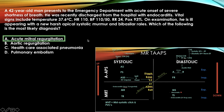The answer is acute mitral regurgitation. The question states the person was recently discharged with endocarditis. Find endocarditis on the chart. Is he an IV drug user? No — so most likely it's not tricuspid stenosis. Endocarditis in a non-IV drug user is acquired mitral regurgitation.